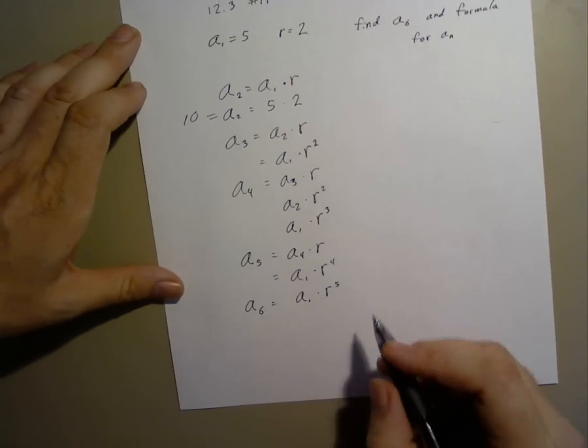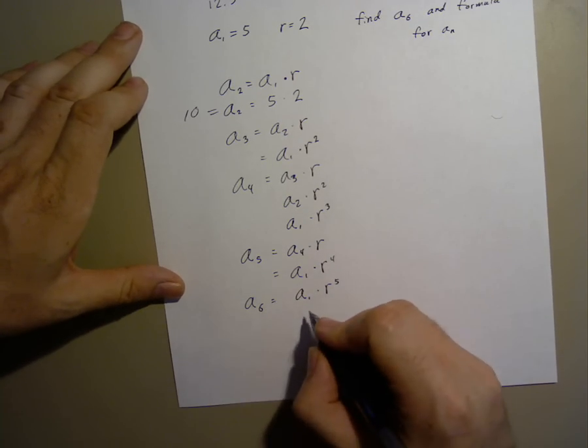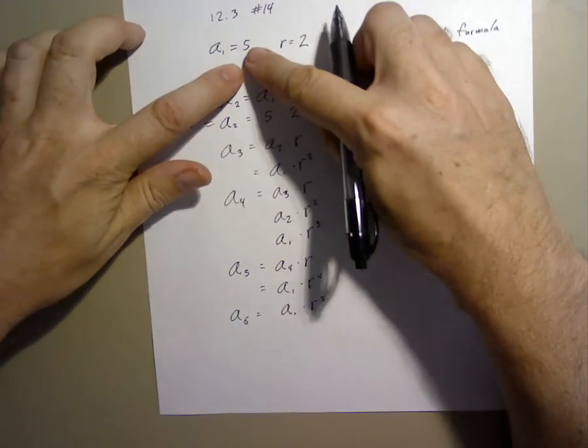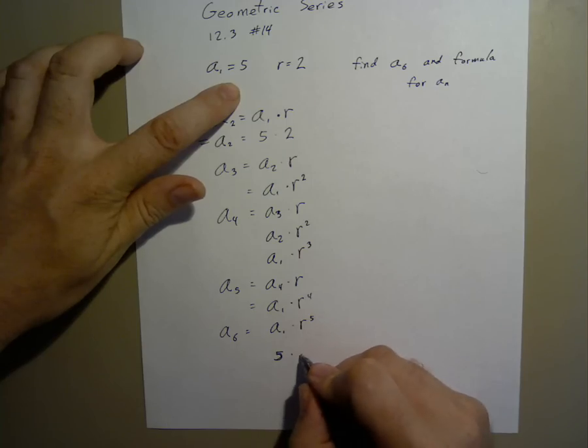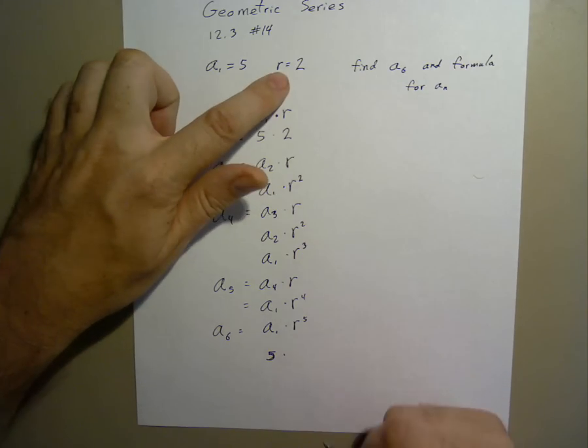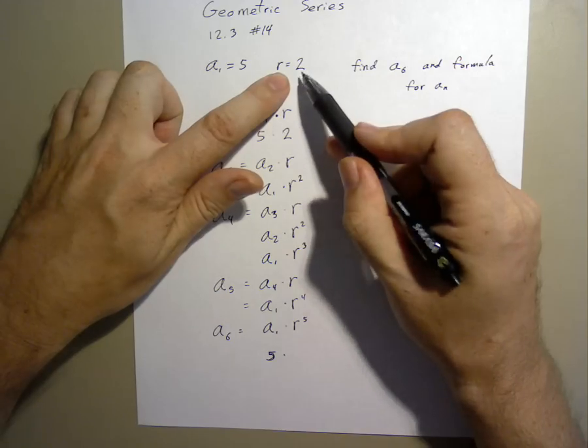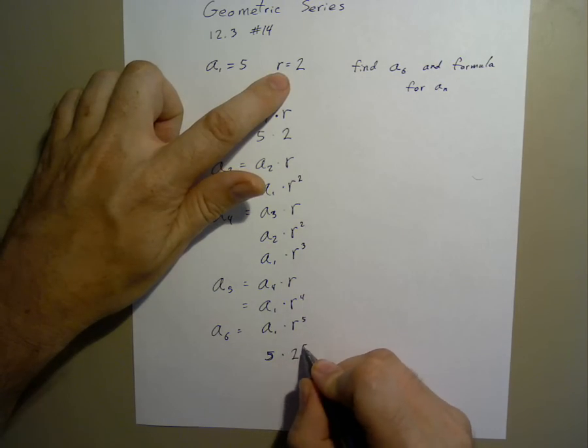That means we can write a1, which is 5, times r, which is 2, to the 5th power.